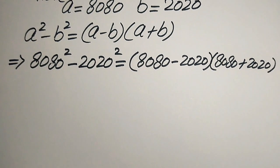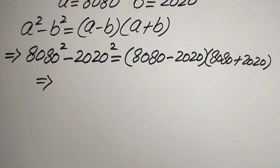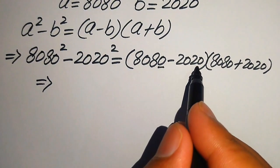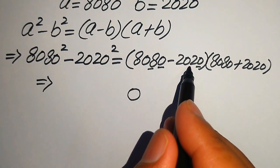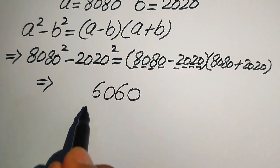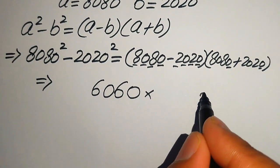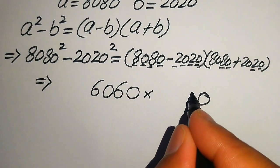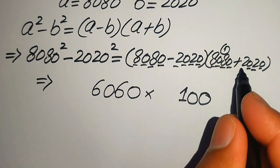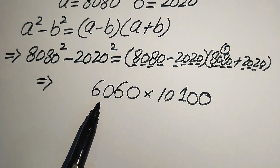Now in the next step we simplify the terms. We subtract the first pair and add the second pair. Subtracting: 0 minus 0 is 0, 8 minus 2 is 6, 0 minus 0 is 0, 8 minus 2 is 6 — giving 6060. Adding: 0 plus 0 is 0, 8 plus 2 is 10, write 0 carry 1, 0 plus 0 plus 1 is 1, 8 plus 2 is 10 — giving 10,100.